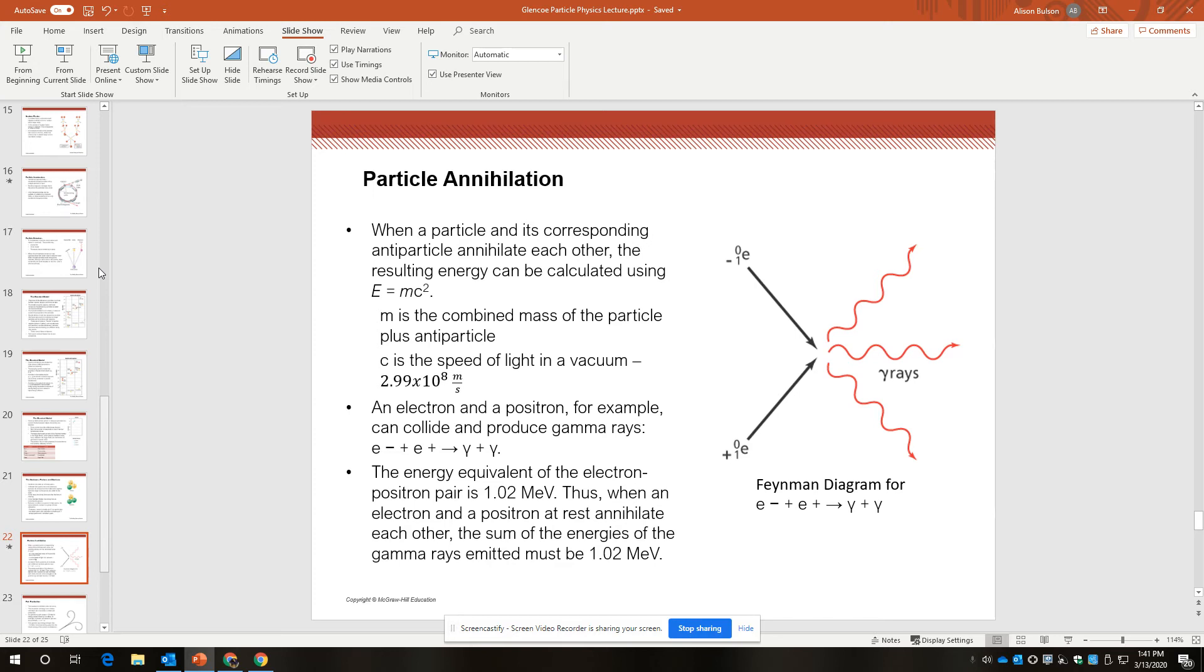So when an electron and positron at rest annihilate each other, the sum of the energies of the gamma rays emitted must be equal to the mass energy of the pair of electron-positron. If the electron and positron are moving when they encounter each other, they have extra energy that must also be transformed into gamma rays.